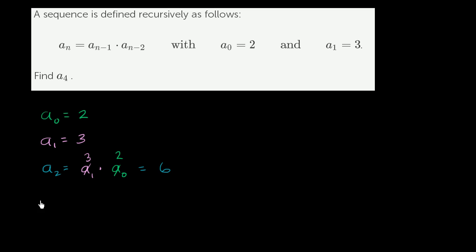Now let's move on to a sub 3. So a sub 3 is going to be the product of the previous two terms, so it's going to be a sub 2 times a sub 1. So it's equal to 6 times 3, which is equal to 18.